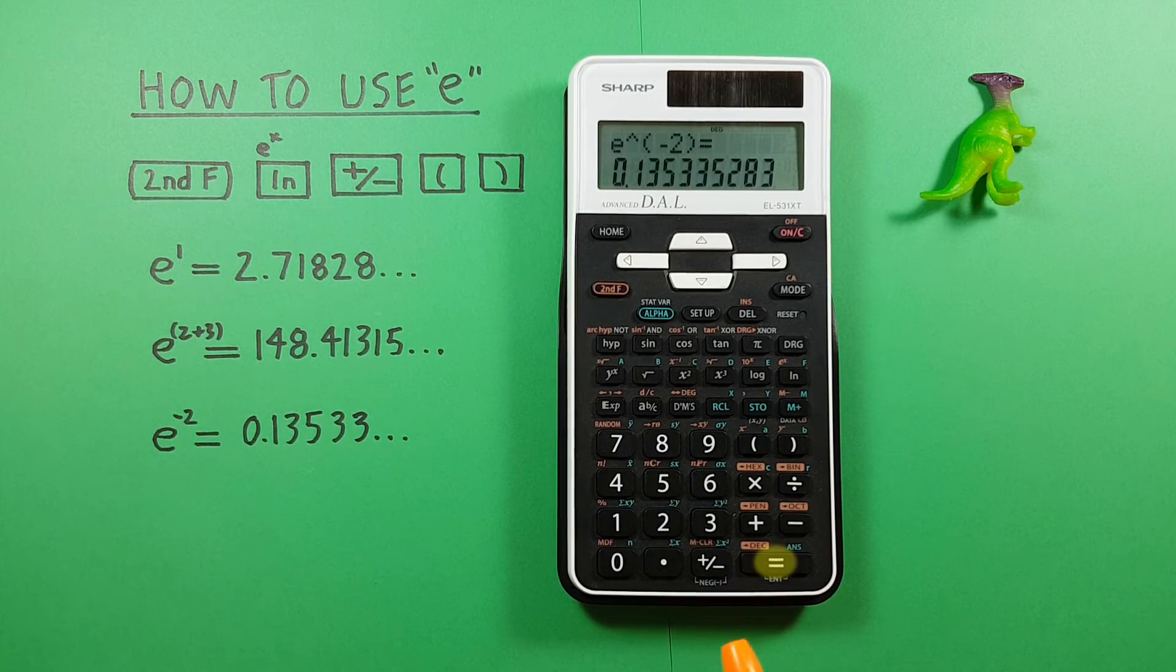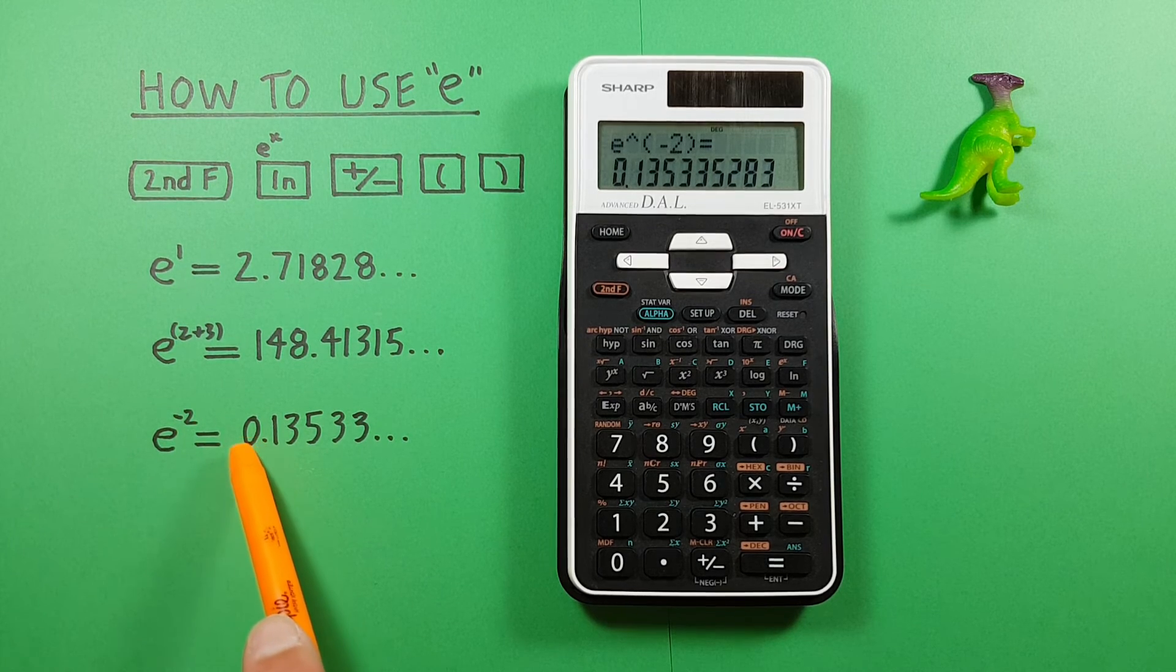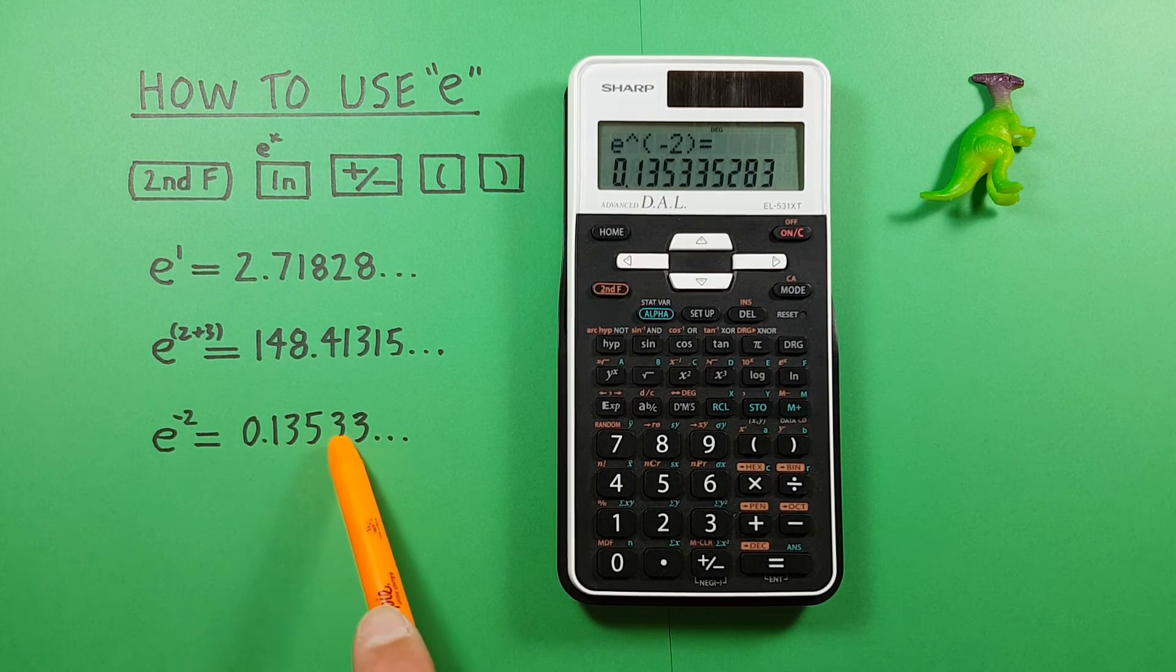Press equals and see we get a result of e to the power of negative 2 is equal to 0.13533 etc.